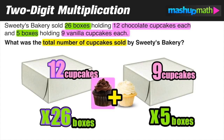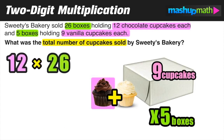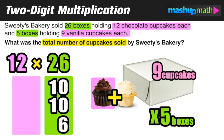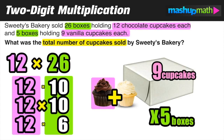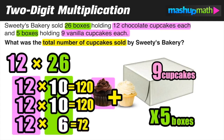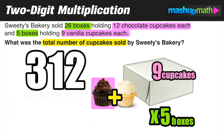For chocolate cupcakes: 12 cupcakes per box times 26 boxes, so 12 times 26. We can break down 26 into 10 plus 10 plus 6, and multiply each piece by 12. So 12 times 10 is 120, 12 times 10 is 120 again, and 12 times 6 equals 72. Adding those together: 120 plus 120 plus 72 equals 312, the total number of chocolate cupcakes sold.